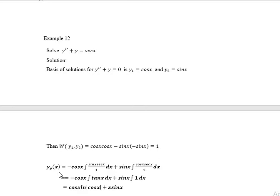Using the formula, yp(x) = −cos(x)·∫(sin(x)·sec(x) / 1) dx + sin(x)·∫(cos(x)·sec(x) / 1) dx. After integrating, we will get cos(x)·ln|cos(x)| + x·sin(x). This is the particular solution using the method of variation of parameters.